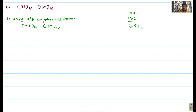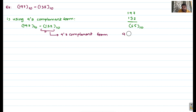Find the 9's complement of 132: subtract 132 from 999. 9 minus 2 is 7, 9 minus 3 is 6, 9 minus 1 is 8. So the 9's complement is 867. Now compute 197 base 10 plus 867 base 10.